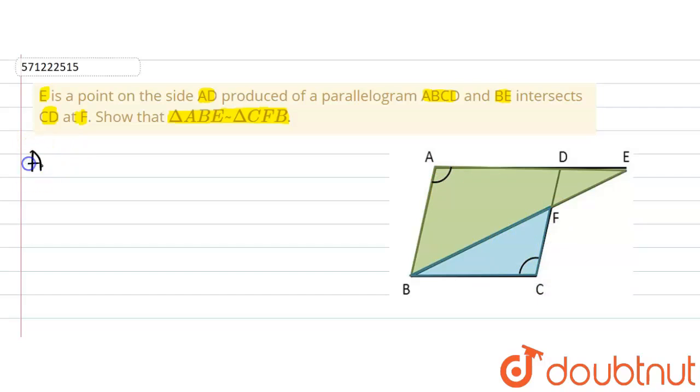So, I can write as ABCD is a parallelogram. So, we can say that angle BAD will be equal to angle BCF.